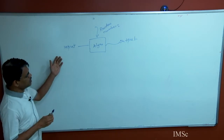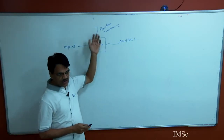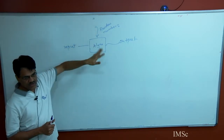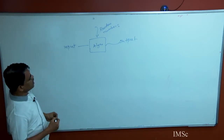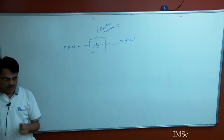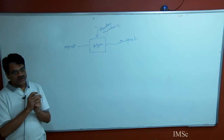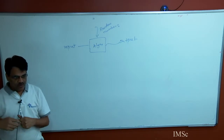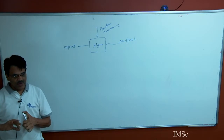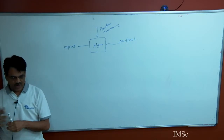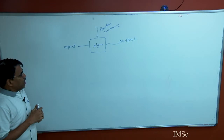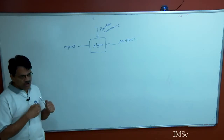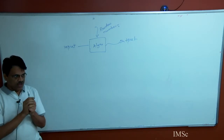Hence, on the same input the algorithm might produce different outputs, because the output does not depend just on the input but also on the random numbers it comes across. The performance of the algorithm on the same input could differ — you run the algorithm once and get some output, run it again and you might get a different output because the randomized algorithm consulted some random number and maybe got a different number.